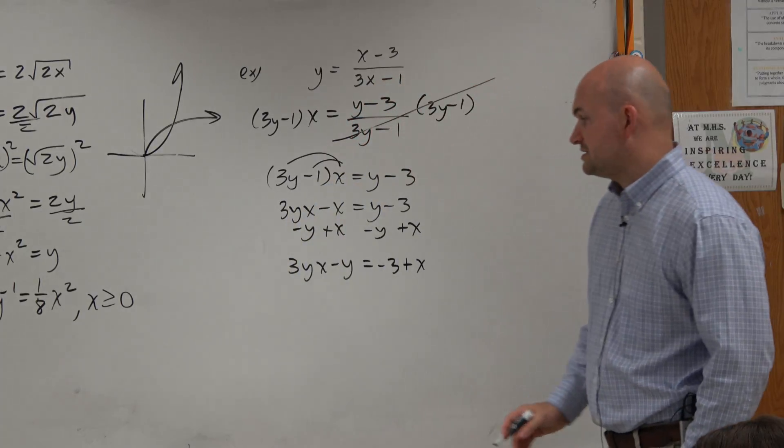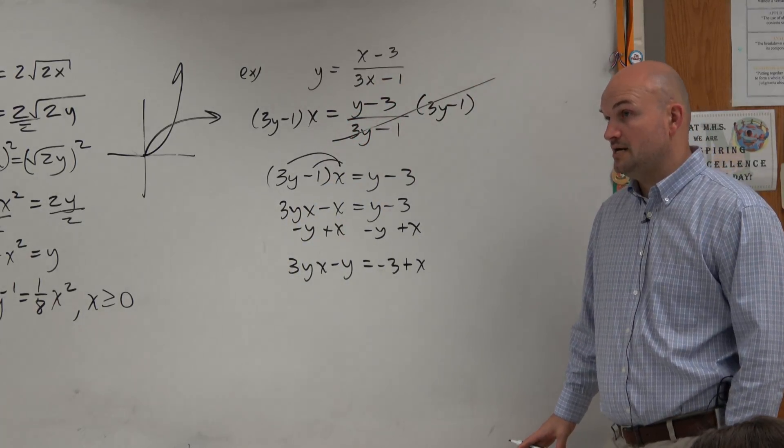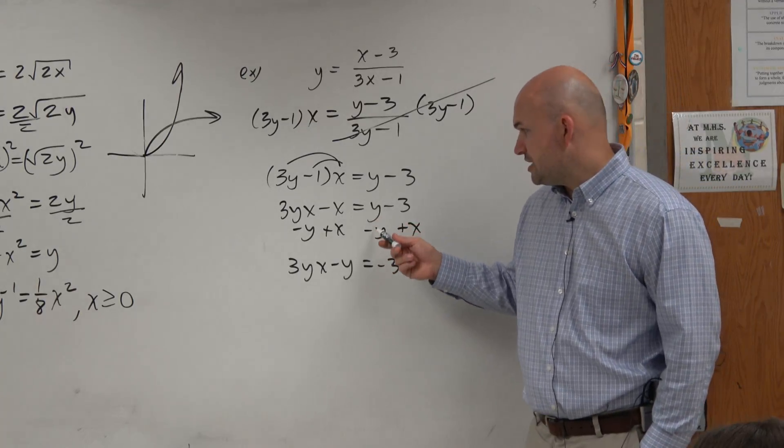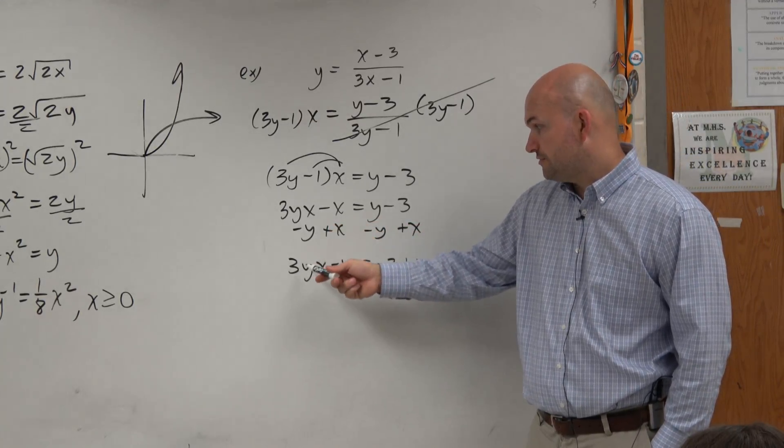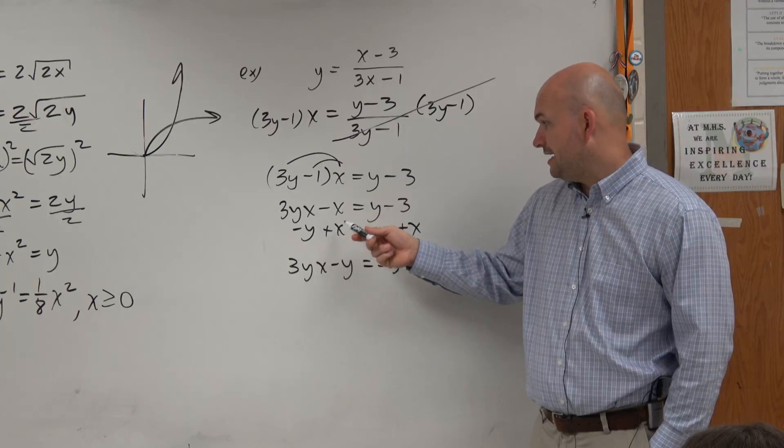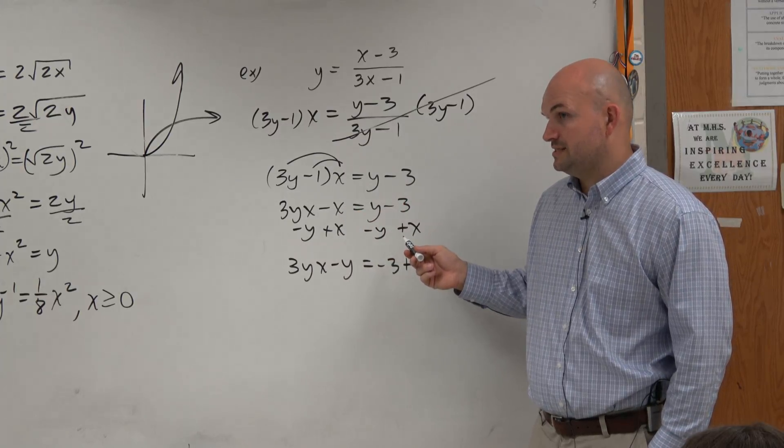Hopefully, you guys followed that. OK. Huh? No? Subtract y on both sides. 3yx minus y. Add an x on both sides. I just did it one step at a time.